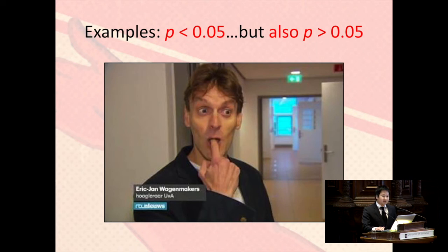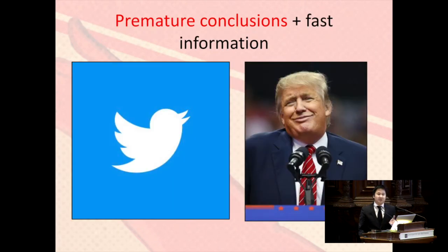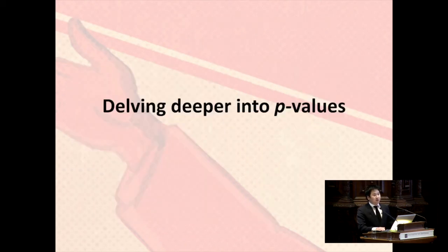So what's going on? First of all, it's correct, then it's not. It's very black and white. And what's happening is p-values lead to premature conclusions. With the fast information, you have the fake news, we have alternative facts. So it's very bad for science, and people have distrust in science now.